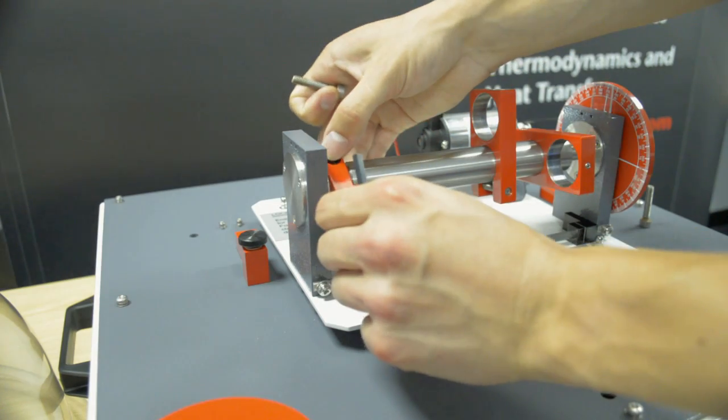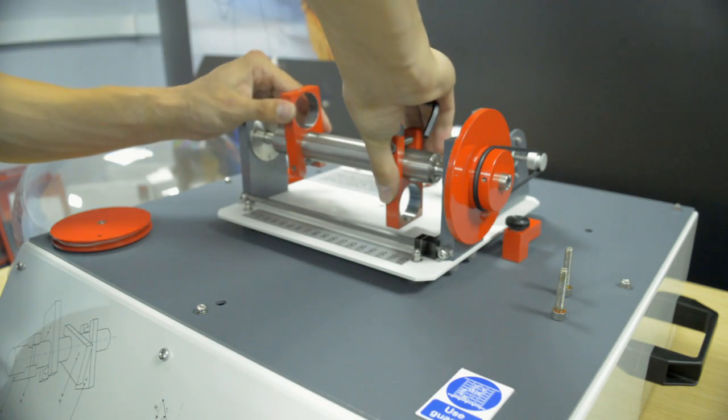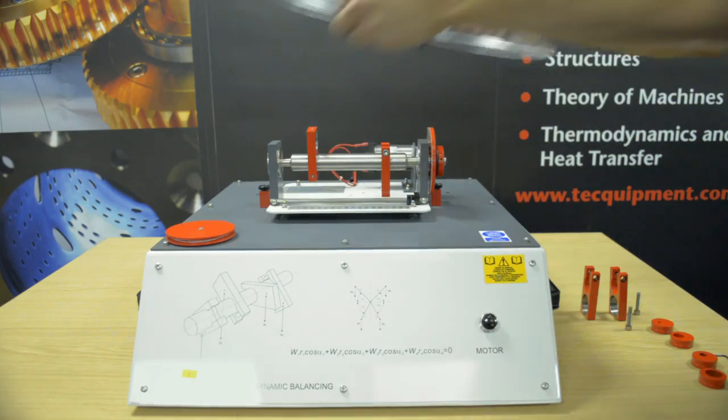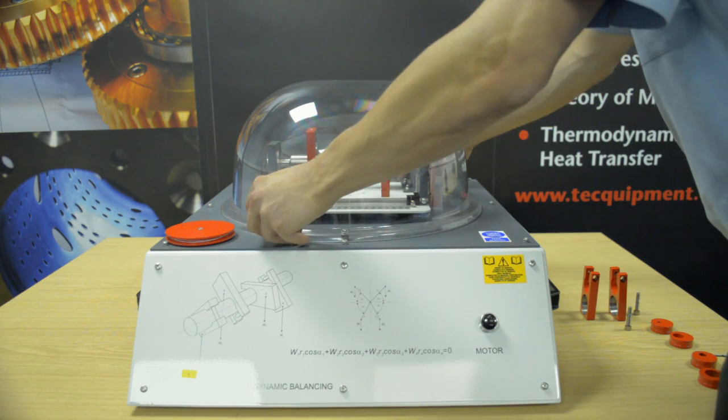Each block also contains a different and removable circular insert allowing students to create four blocks of different mass and moment. A transparent safety dome covers the whole rotating assembly.